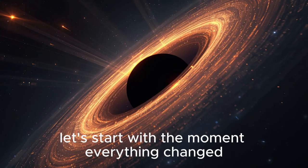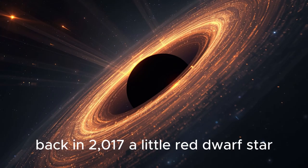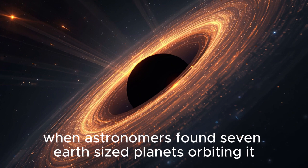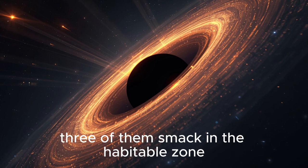Let's start with the moment everything changed. Back in 2017, a little red dwarf star 40 light years away shocked the world when astronomers found seven Earth-sized planets orbiting it, three of them smack in the habitable zone.